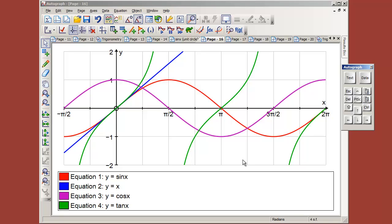Here we're going to have a look at trig functions in the advanced level of Autograph. In the advanced level you have the choice between degrees and radians.